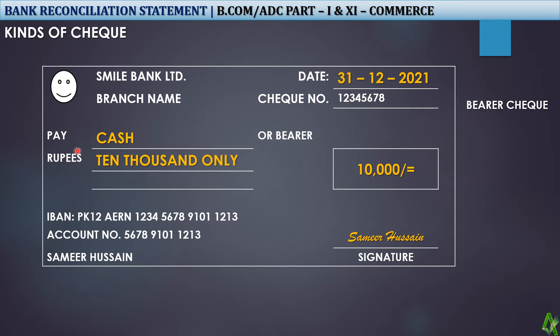The banker said, 'Yes sir, what can we do?' Your friend said, 'I have a check, I want cash.' The bank checked it — date, amount, signature — everything is okay. They then checked the account and paid your friend 10,000 rupees from my bank account. Because it is a bearer check, they paid whoever presented it.